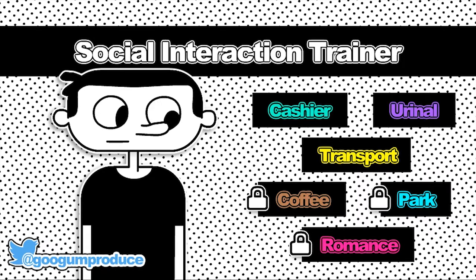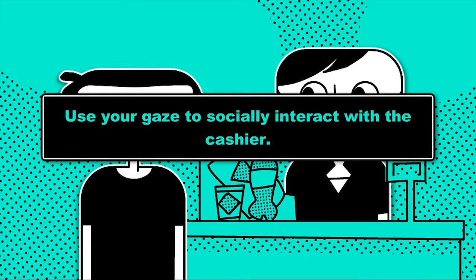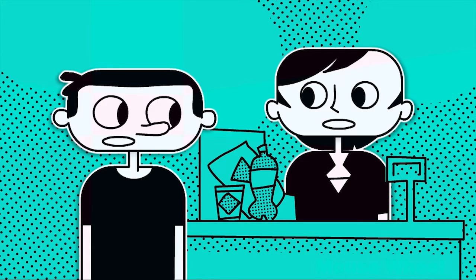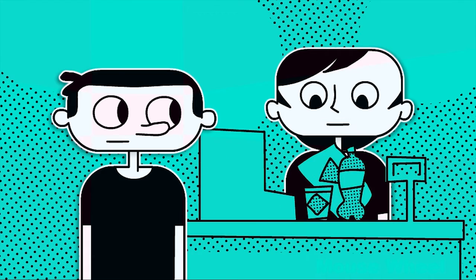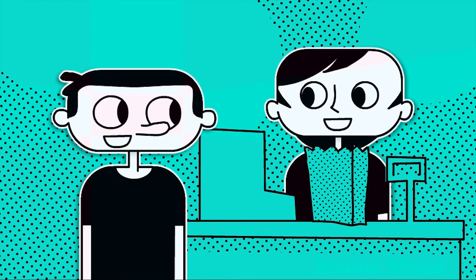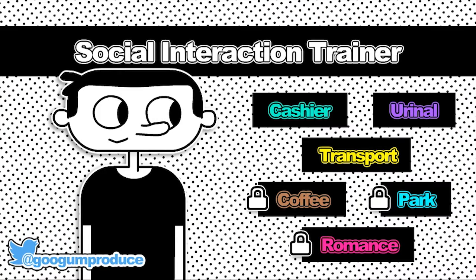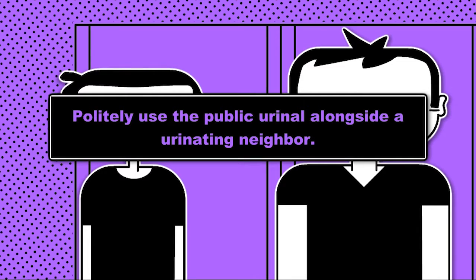Cashier, urinal — let's just start from one. Use your gaze to socially interact with the cashier. Nice, oh we're doing it, we fucking did it, I'm amazing! That was so good. Politely use the public urinal.